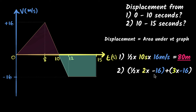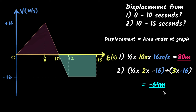If velocity is negative, the height is negative, so it'll be minus 16. The triangle area is ½ × 2 × (−16), and the rectangle area is 3 × (−16). That gives you −64 meters. This is telling us that from ten to fifteen seconds, the displacement was negative — meaning the car traveled backwards. So this is how you can calculate acceleration and displacement from a VT graph.